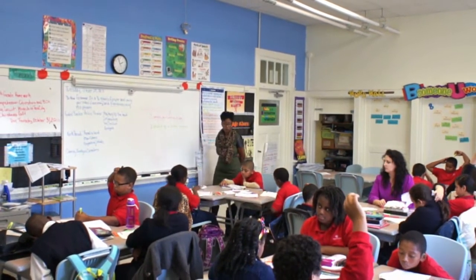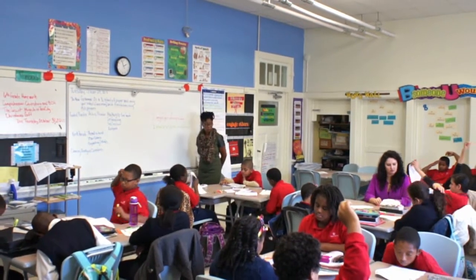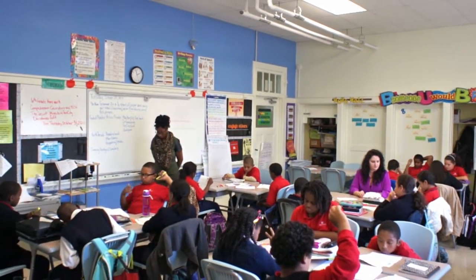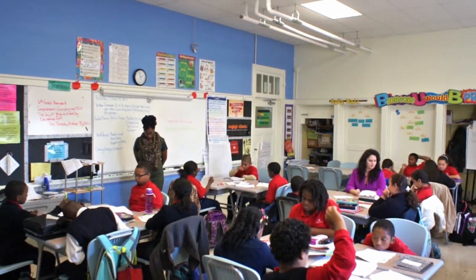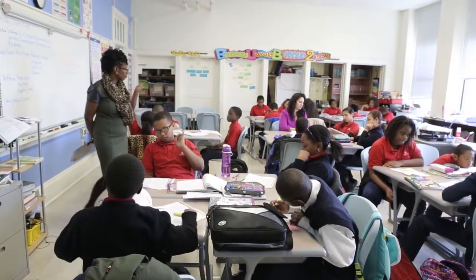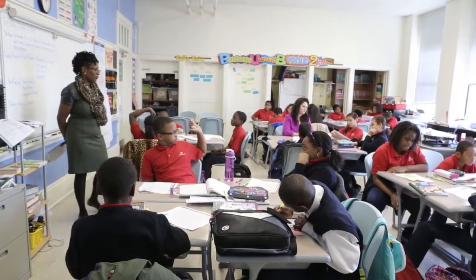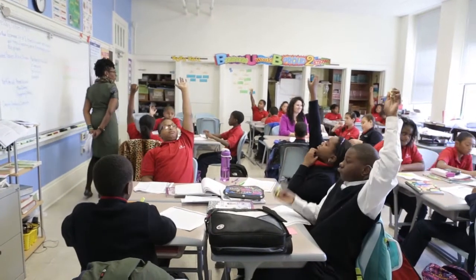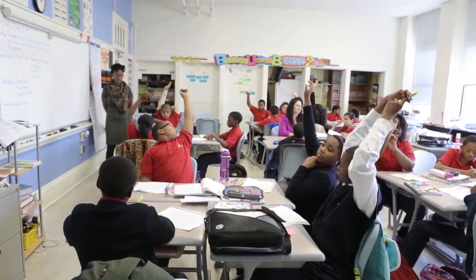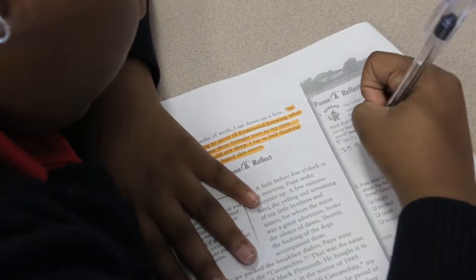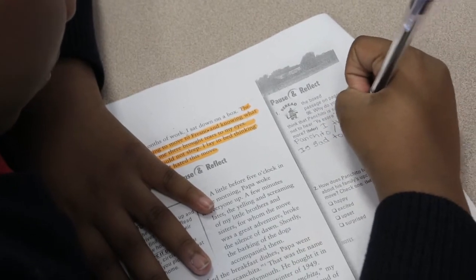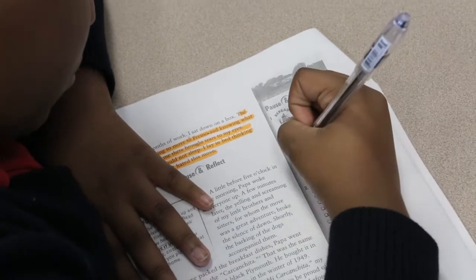Prince — I'm on page ninety-seven, and the last sentence says, 'I laid my bed thinking about how much I hated this move.' Very good. Raise your hand if you had that. If you didn't have that, make sure you highlight it: 'I laid my bed thinking about how much I hated this move.'